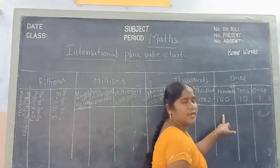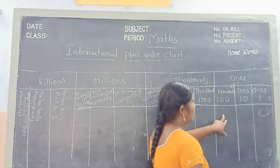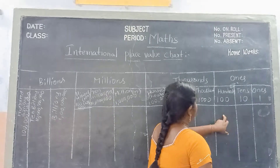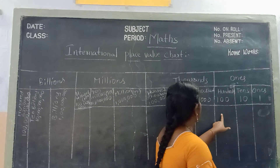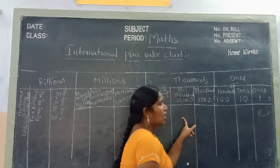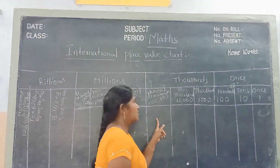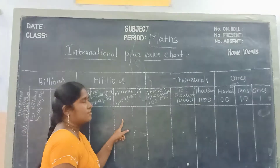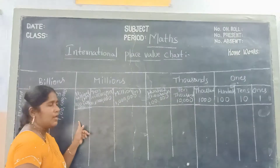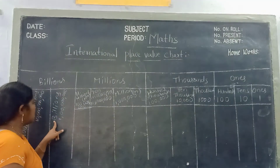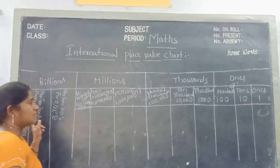Once again, see children. In the International Place Values Chart we are dividing the figures. See: ones, tens, hundreds. In the thousands place we have thousands, ten-thousands, hundred-thousands. And next we go to millions, ten millions, hundred millions. Then billions.